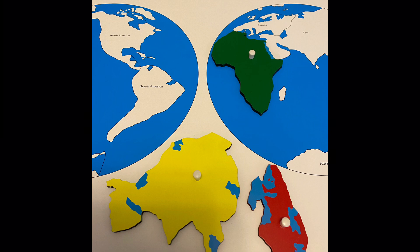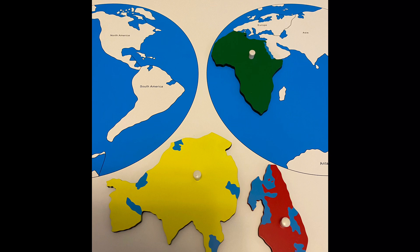Get the child to hold up the puzzle piece to the matching continent on the globe and return the puzzle piece back to the map. Have the child match the remaining continents until they have matched all of them.